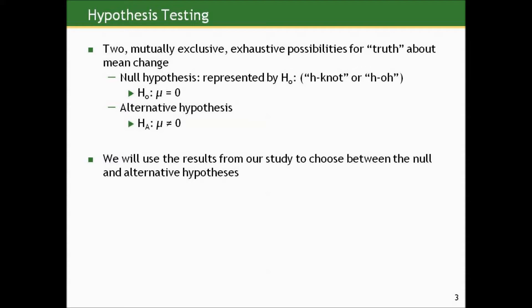Hypothesis testing generally starts by postulating two mutually exclusive — i.e., no crossover — and exhaustive — i.e., they cover all possibilities — hypotheses about the true mean change. The null hypothesis, frequently represented as H₀ and pronounced H-naught, is generally in paired designs no difference in the groups being paired. In our blood pressure and contraceptives example, it's no change in blood pressure after oral contraceptive use compared to before, on average. The alternative hypothesis, the complement of that null, is that the population parameter — the average change in blood pressure — is not zero. We use the results from our study to choose one of these two hypotheses.